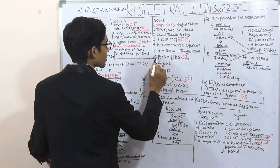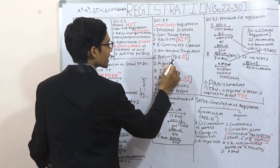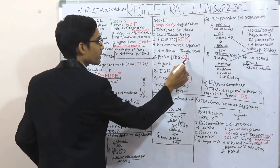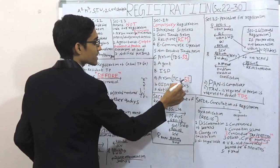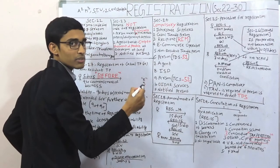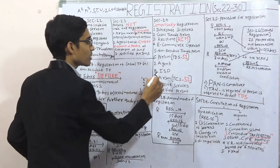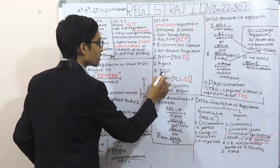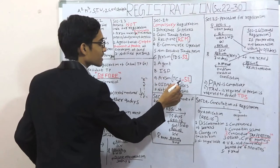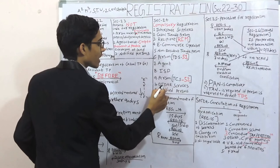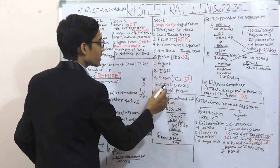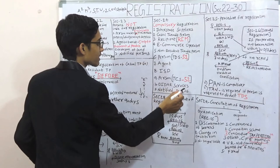Point number 6: person required to deduct TDS under section number 51. TDS is covered under section number 51. TCS is covered under section number 52. Seven: agent — an agent who makes taxable supplies on behalf of a principal. Eight: input service distributor. Person required to collect TCS under section number 52. Nine: OIDAR services — that is, online information and database access and retrieval services.